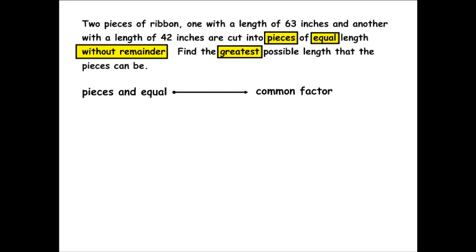The word pieces indicates that we have to use factors to solve this problem. Factors are like pieces that fit equally inside larger numbers. Because the pieces that are going to be cut have to be equal length, we would say that the factors would have to be common. Without remainder also signifies that it has to do something with factors, because factors being divided into a larger number will have no remainder.